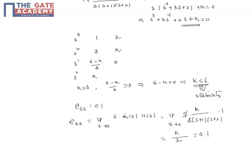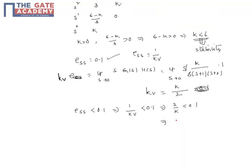Sorry, this is not ESS actually. ESS equals 0.1, but this is the formula for Kv. First find the gain Kv, then ESS is 1 by Kv. So what we got is Kv. Once you find Kv, ESS less than 0.1 implies 1 by Kv less than 0.1, which means 2 by K less than 0.1, so K is greater than 20.